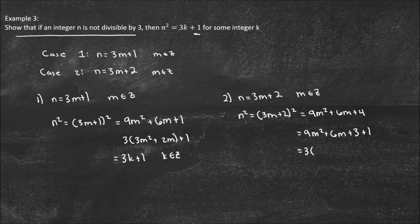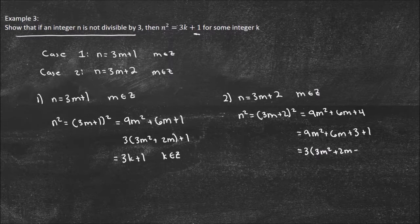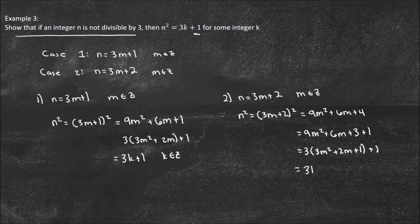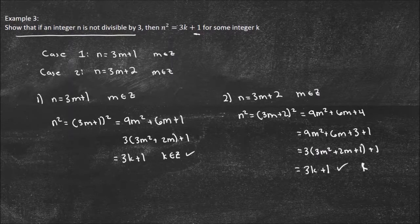Now I'm going to factor out my 3. So I'm going to take 3 out, and I'll get 3 times 3m squared plus 2m plus 1 plus 1. And I know that this is an element of Z, so I can write that as k again. And that equals 3k plus 1. And that's what we wanted to prove. So k is an element of Z again, of course.